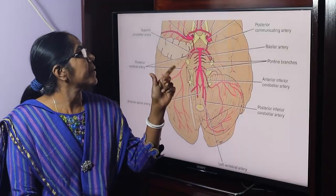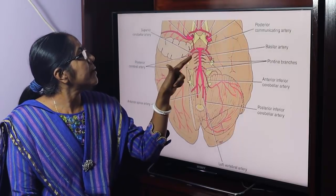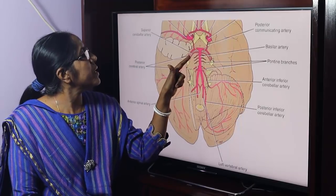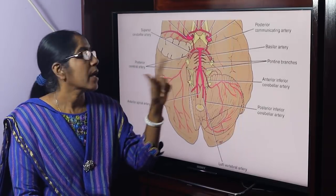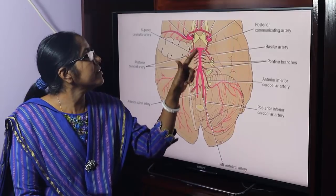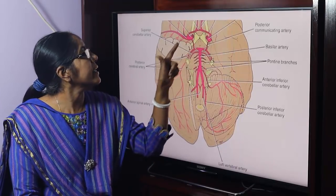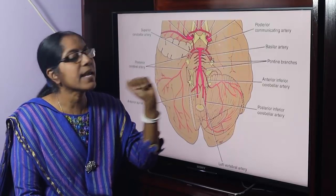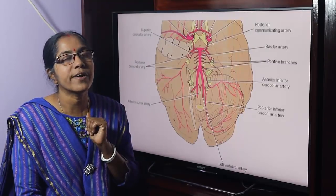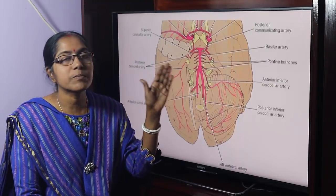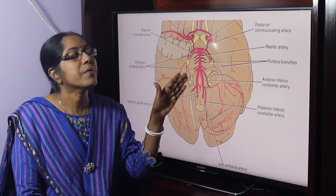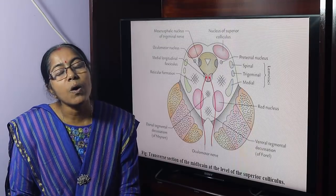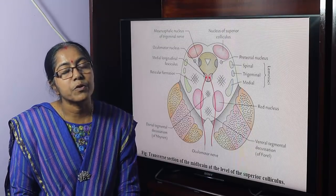The blood supply of the midbrain: the midbrain is supplied by the posterior cerebral and superior cerebellar arteries. It also receives branches of the basilar artery, branches of the posterior communicating artery, and the anterior choroidal artery. The venous drainage is into the great cerebral vein and basal veins. This is all about the midbrain.